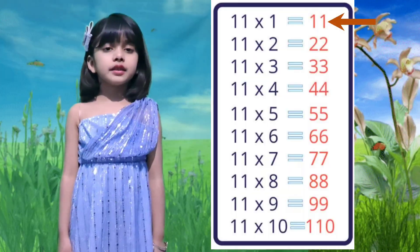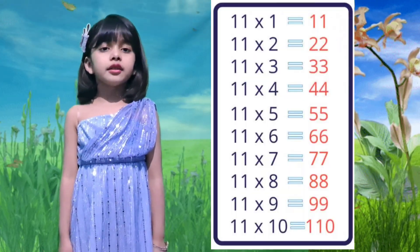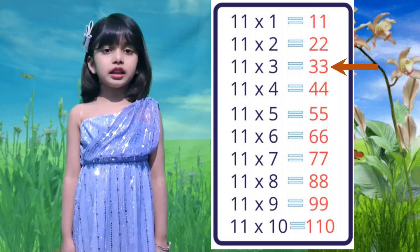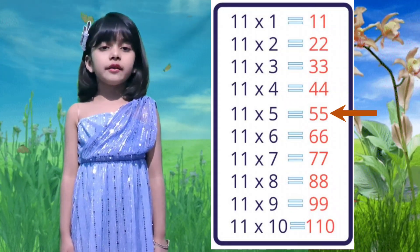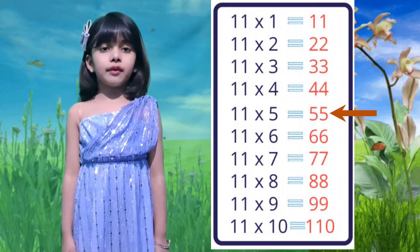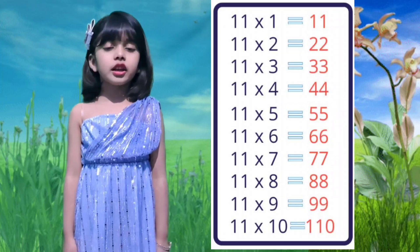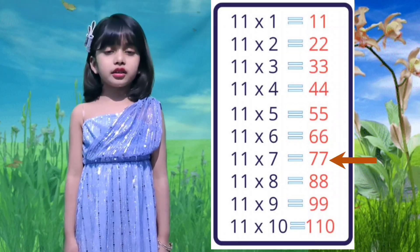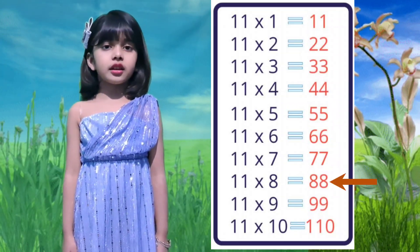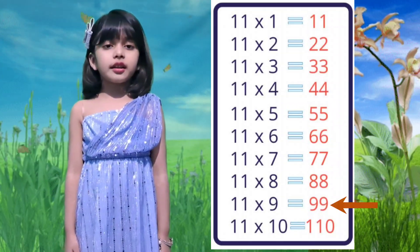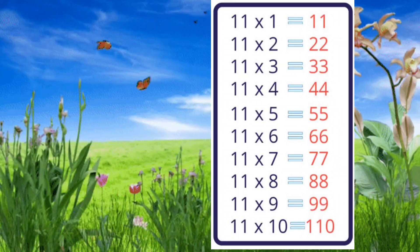11×1 is 11, 11×2 is 22, 11×3 is 33, 11×4 is 44, 11×5 is 55, 11×6 is 66, 11×7 is 77, 11×8 is 88, 11×9 is 99, 11×10 is 110.